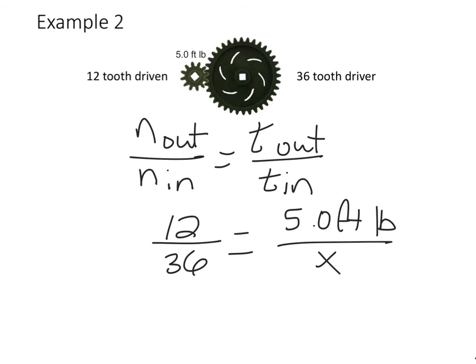And I'm going to solve for torque in. So we have 5.0 times 36 divided by 12, and that's going to give me 15 foot-pounds.